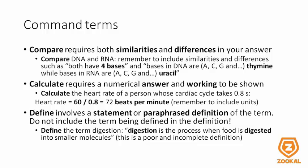'Calculate' is a command term that requires a numerical answer as well as working to be shown. For example, calculate the heart rate of a person whose cardiac cycle takes 0.8 seconds. The answer cannot just be 72 beats per minute — you need to show how you arrive at it. Write: heart rate equals 60 seconds divided by 0.8 seconds per cycle, leading to 72 beats per minute. You must remember to include units, or else your answer will be invalid.